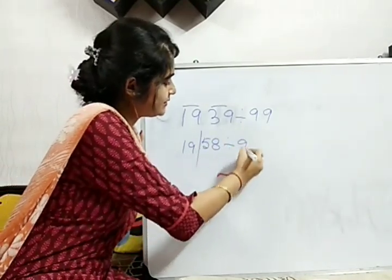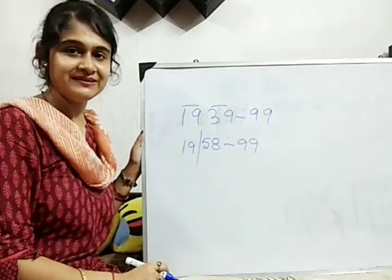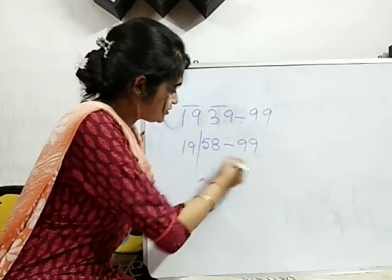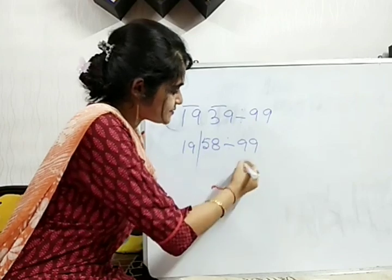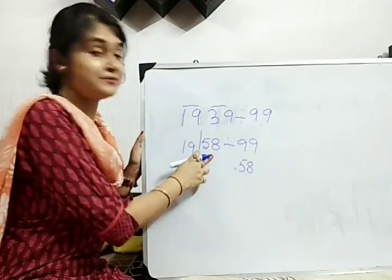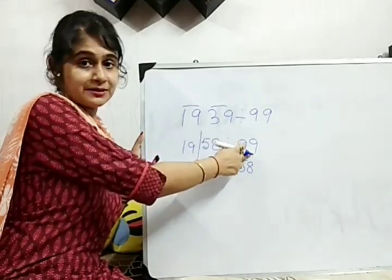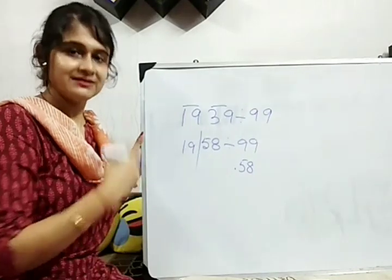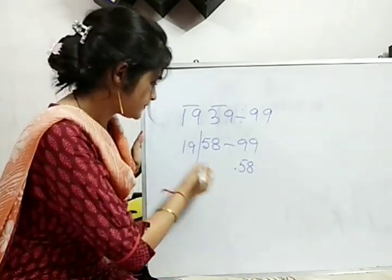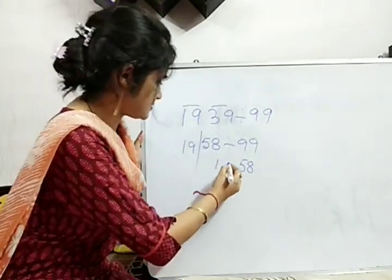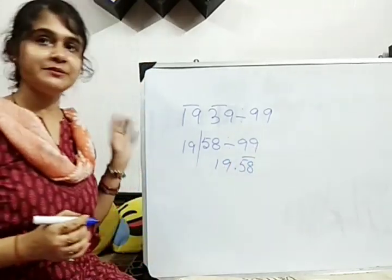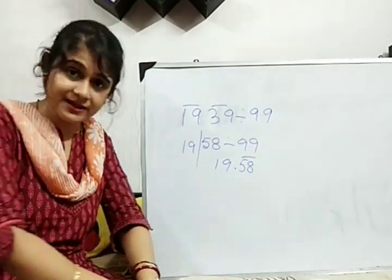Now, 58 divided by 99 because there is no more number. Right? So, what you will do? You will just give decimal and this will go that side. Because, I told you if the number is less than this number, it will just move towards the right end. Done? Now, this 19, yes, this 19 will come down, give a bar. 19.58 is your answer. Okay?